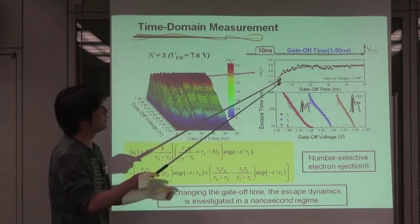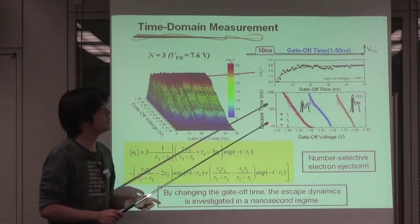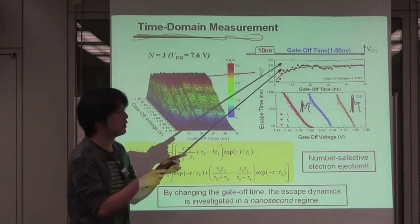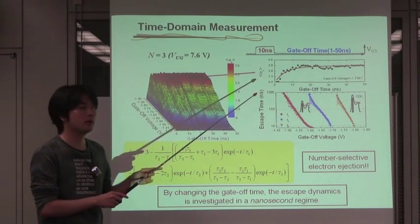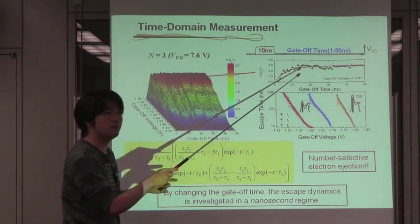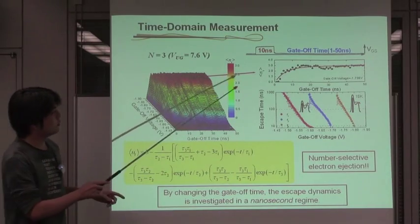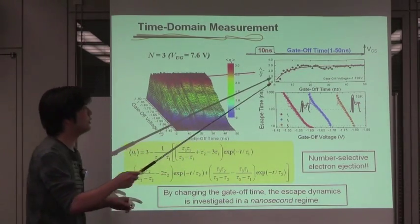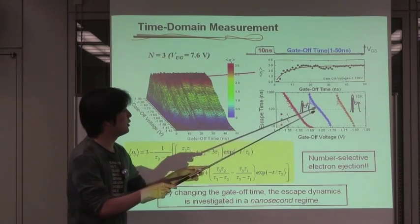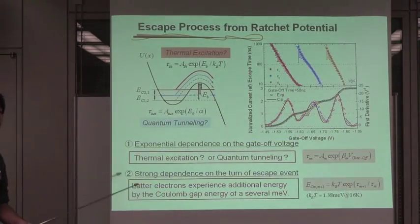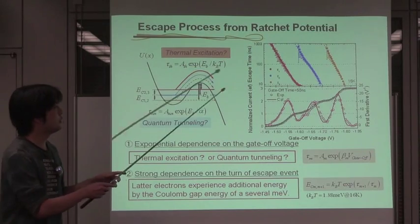This figure is a typical time domain analysis extracted at a certain gate-off voltage. Please note, first and second electrons escape from the quantum dot within around 10 nanoseconds. But the third electron can remain in the quantum dot for a relatively longer duration. By comparing the experimental plot with the theoretical curve shown here, we determined the escape times of the first and the second and the third electrons.